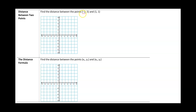Now we're going to talk about the distance between two points. We want to find the distance between the points negative 2, 5 and 1, 1. Let me plot both of these points: the first point is negative 2, 5 and the second point is 1, 1. We want to find the distance between them. We can't just get out a ruler and measure — that won't be exact.